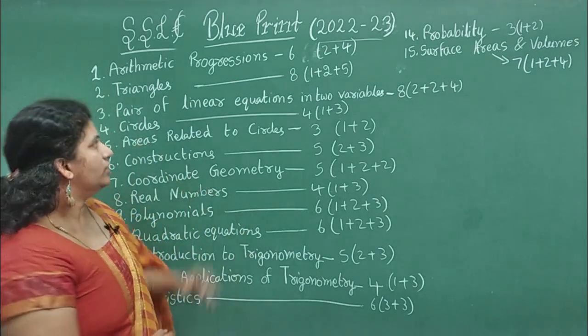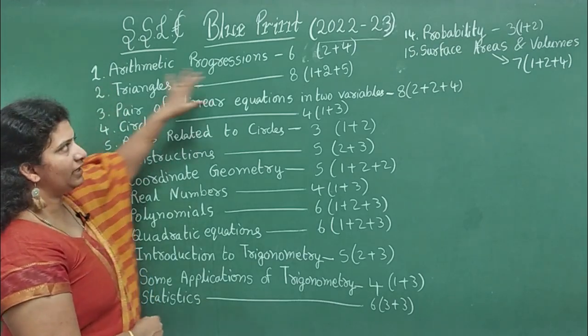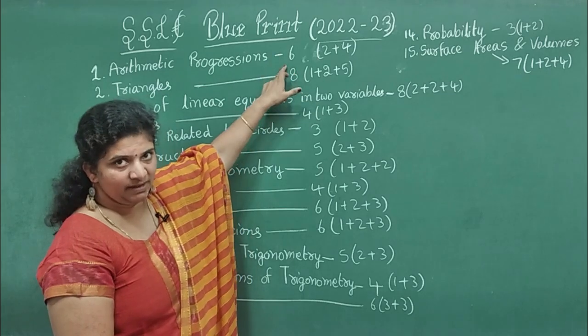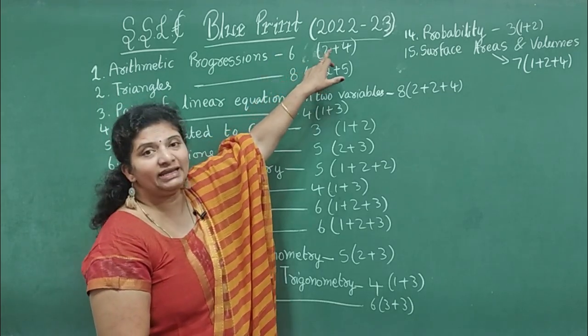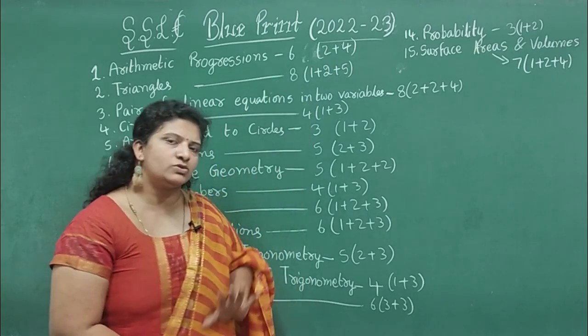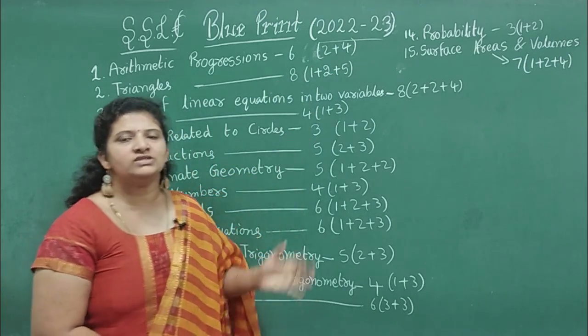First chapter, Arithmetic Progressions - the weightage we can guess for this is 6 marks. You can get a 2 marks question and a 4 marks question. Four marks question is compulsory. Two marks question we can get on nth term or a certain term.